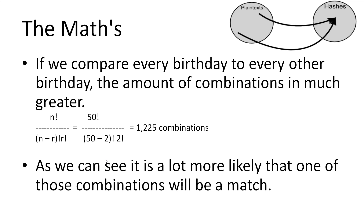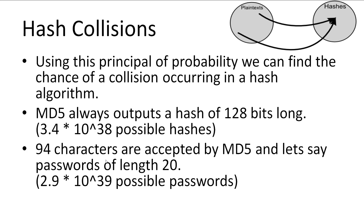Now it doesn't seem so out of the ordinary that there's a 97% chance that two people have the same birthday. So back to hash collisions — why is this important? Using this equation, we can calculate the probability that a collision will occur on a hashing algorithm. Let's take an example of MD5. MD5 will always return a hash that is 128 bits long.